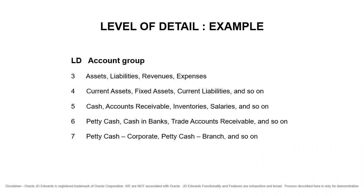Please remember that Level 9 is the Most Detailed and Level 1 is the Least Detailed. Levels 1 and 2 are reserved for Company and Business Unit Totals. Levels 8 and 9 are reserved for Posting Accounts in the Job Code System. Level 3 is assigned to Title Accounts for the Balance Sheet — Assets, Liabilities, and Equity.